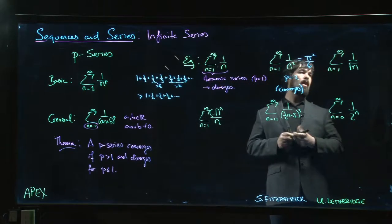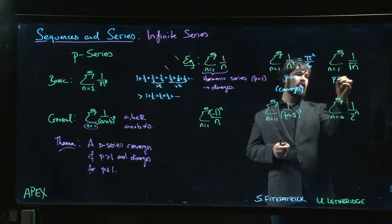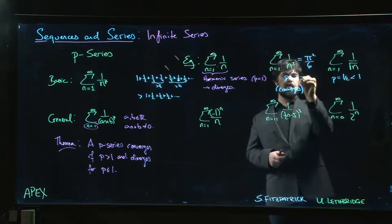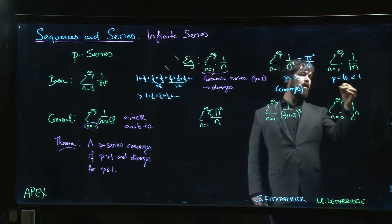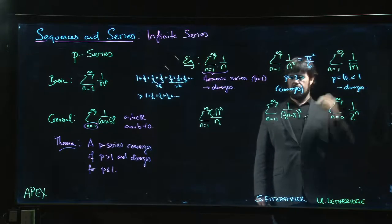How about this one? This is, well, root n is 1 half. So it is a p-series, but p is equal to 1 half. And 1 half is smaller than 1. 2 is bigger than 1, we should have pointed that out. And so that means that this one diverges.